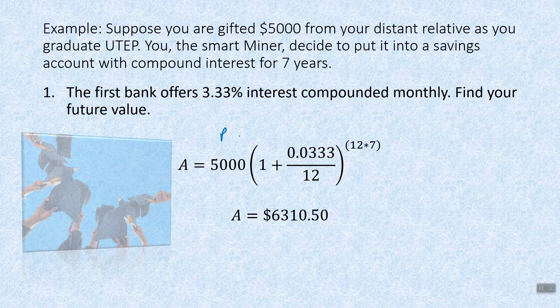We know our 5,000 is our P, 1 plus our interest is 3.33%. We always convert that to a decimal by moving two places. 3%, three cents, three percent, three out of a hundred, three is in the hundredth place. 12 because we have monthly, for seven years. And this one is also monthly. Enter the whole thing in the calculator exactly as it's written. I like parentheses around my exponent here. Use parentheses because your calculator is only as smart as the person entering the information. And we end up with $6,310 and 50 cents.